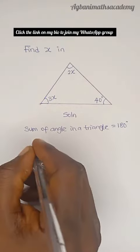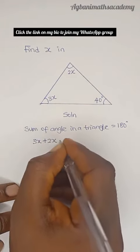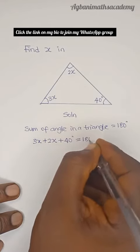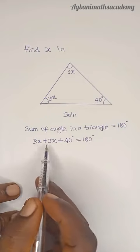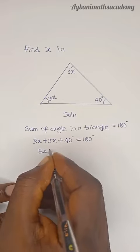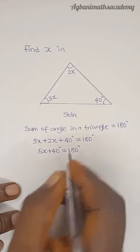So this means that 3x plus 2x plus 40 degrees is equal to 180 degrees. 3x plus 2x is going to give us 5x plus 40 degrees equals 180 degrees.